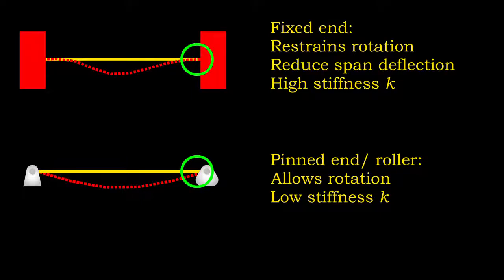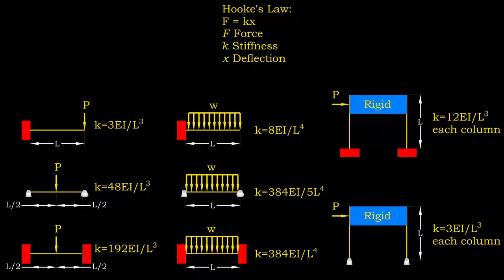On the other hand, a fixed-end beam transfers moment due to exerted force to adjacent members and shows lower deflection. Thus, the element with stronger end restraint possesses higher stiffness. Based on all four stiffness-manipulating factors, empirical formulas for member stiffness are available for different restraint conditions.